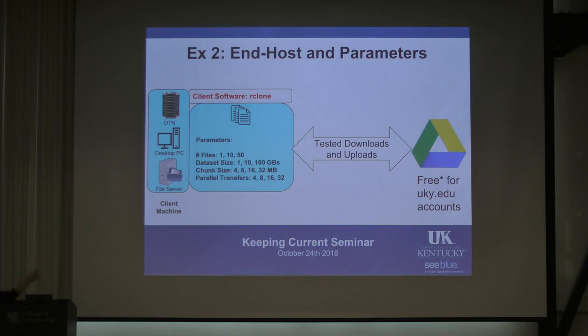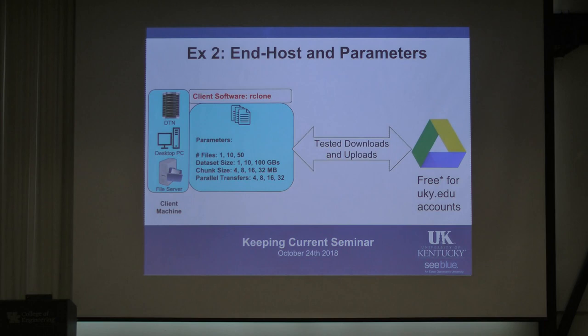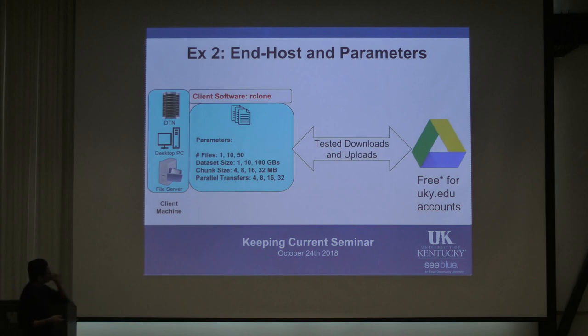Now that we had those two things fixed, we decided to also send data from a desktop machine in the Hardware lab and a server in the Parks 3 basement — not just from the data transfer node. We also changed the dataset characteristics: different file sizes, and we varied the number of simultaneous transfers to see how that affects the overall transfer rate.